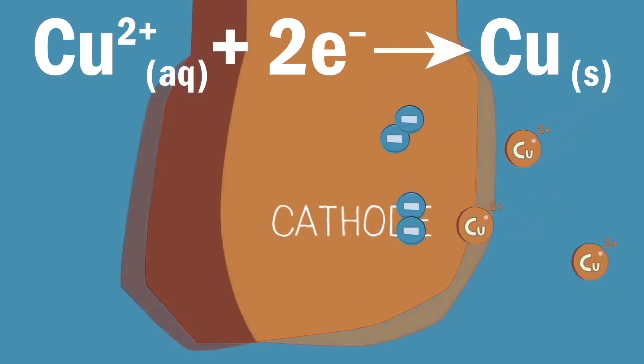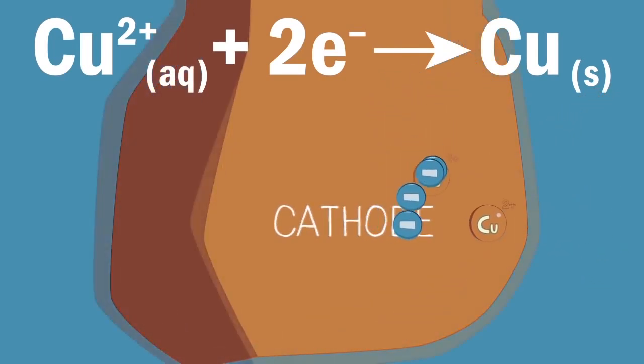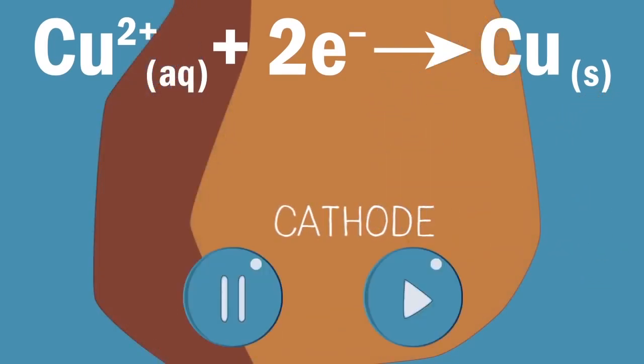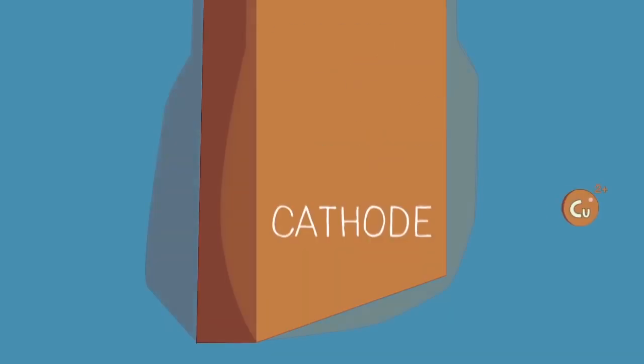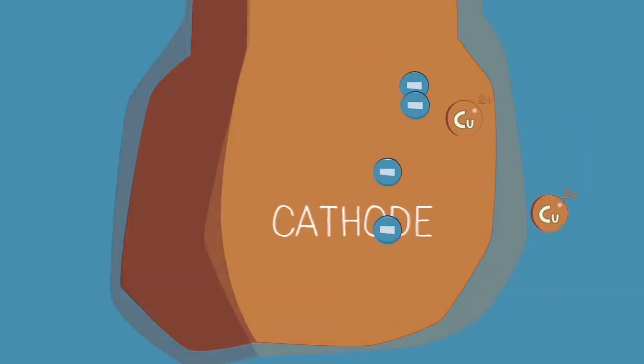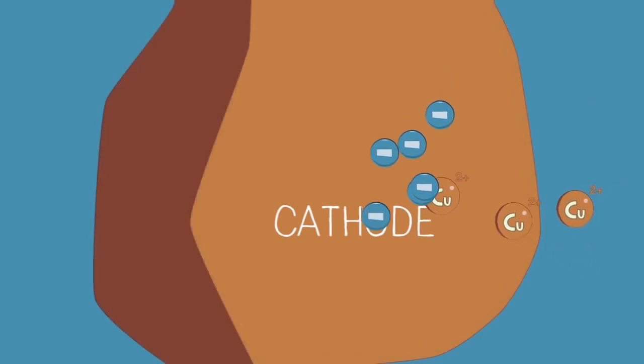As this happens, what do you notice happens to the size of the strip? Pause and continue when ready. The answer is that you should notice the cathode strip getting larger because pure copper metal is being deposited at the cathode.